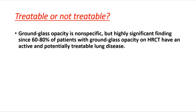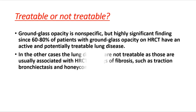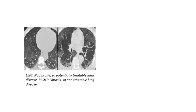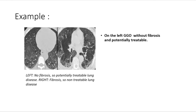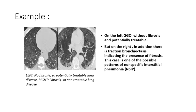Ground glass opacity is non-specific but highly significant, since 60–80% of patients with GGO on HRCT have an active and potentially treatable lung disease. In other cases, lung diseases are not treatable and are usually associated with HRCT findings of fibrosis such as traction bronchiectasis and honeycombing. GGO without fibrosis is potentially treatable; GGO with traction bronchiectasis indicates fibrosis and non-treatable disease, as in one pattern of NSIP.